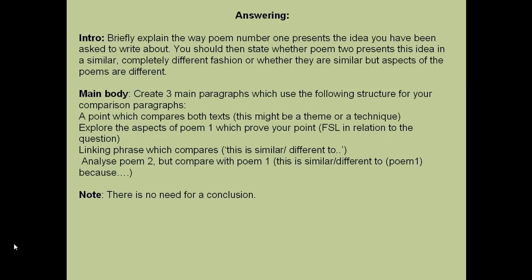For the main body, you're essentially repeating this method three to five times. You might come up with five great ideas and write five paragraphs perfectly, maybe four, maybe three — it's all about what you can do in the time. Begin with a point that compares both texts, which might be a theme or a technique: 'both poems explore...' Then analyse poem one using form, structure and language. Then use a linking phrase to show you're moving to poem two. Within that same paragraph begin to analyse poem two, and every time you analyse, ask: is that similar or different to poem one, and why?